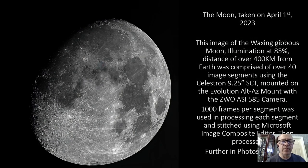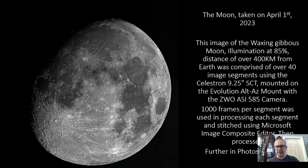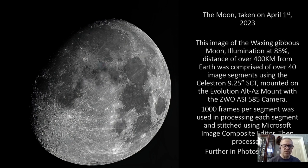This image was taken on April 1st, 2023. It is an image of the waxing gibbous Moon at 85% illumination, over 400,000 kilometers from Earth. This image is actually comprised of over 40 segments or pieces of the Moon that I imaged using the Celestron 9.25-inch Schmidt-Cassegrain and the ZWO ASI 585 camera. A thousand frames were taken for each of the 40 or so segments, and they were stitched using a free piece of software called Microsoft Image Composite Editor, then processed further in Photoshop 2023.